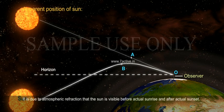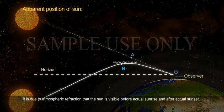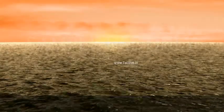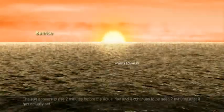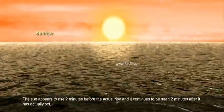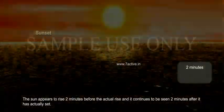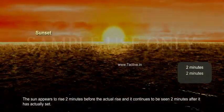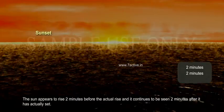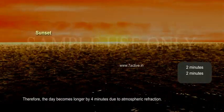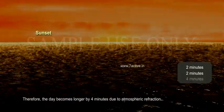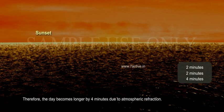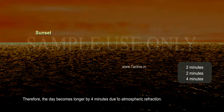It is due to atmospheric refraction that the sun is visible before actual sunrise and after actual sunset. The sun appears to rise two minutes before the actual rise, and it continues to be seen two minutes after it has actually set. Therefore, the day becomes longer by four minutes due to atmospheric refraction.